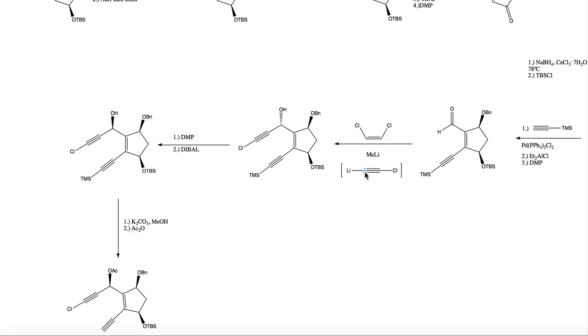So you can imagine why they got this stereocenter instead of this one, which they then changed to in the next step. But it's because when it's attacking, it can attack from this direction, or it can attack from this direction. So if it attacks from this direction, it's pretty hindered here, so it instead attacks from this direction, and it gives this stereocenter selectively.